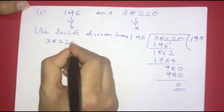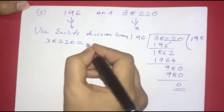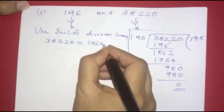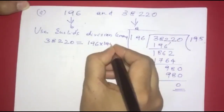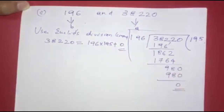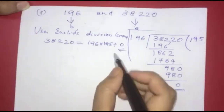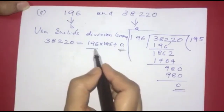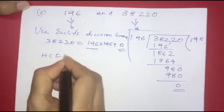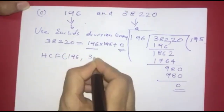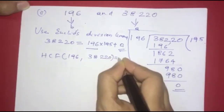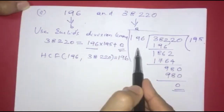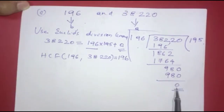38220 is equal to BQ plus R, which is 196 into quotient 195 plus remainder 0. Since the remainder is 0 in this step, B is the HCF. So the HCF of 196 and 38220 is 196.